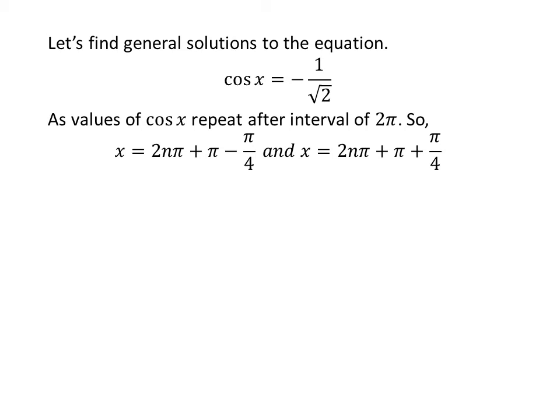Let us find the general solutions. As we know, the values of cosine of x repeat after an interval of 2 times pi. So, the general solutions are 2 times n times pi plus pi minus pi upon 4, and 2 times n times pi plus pi plus pi upon 4, where n is an integer.